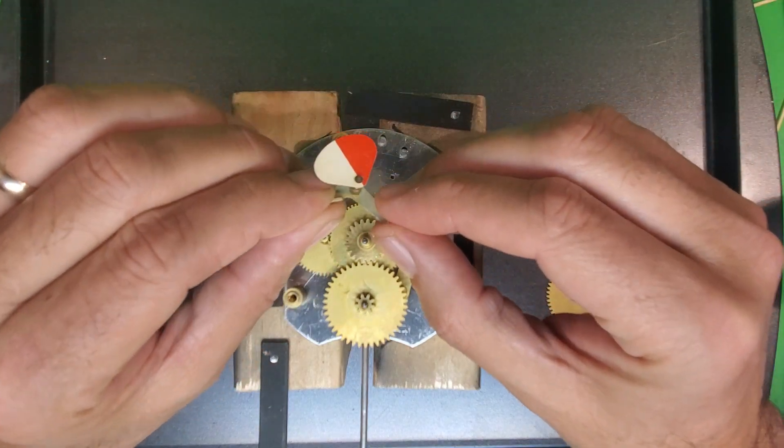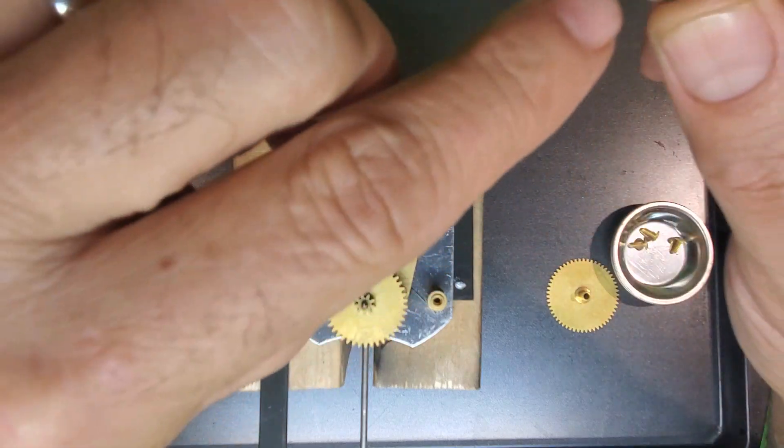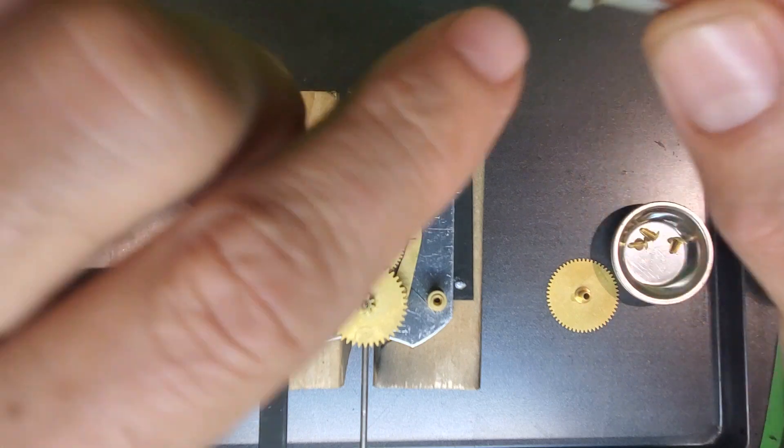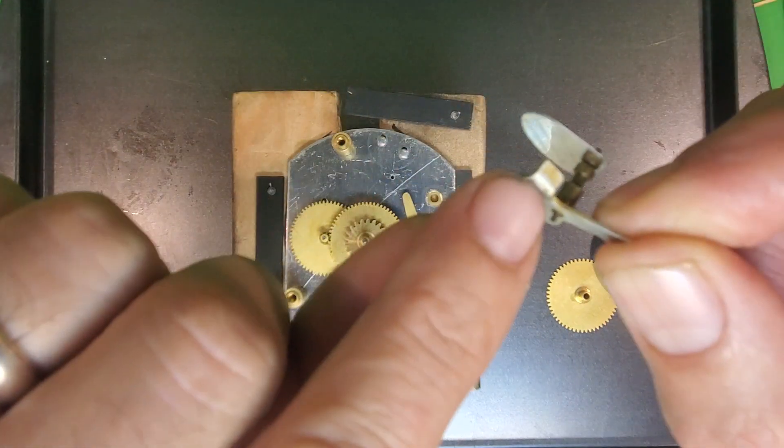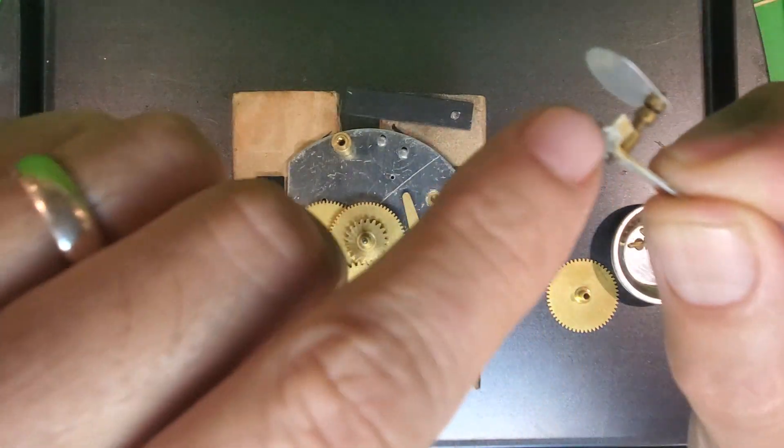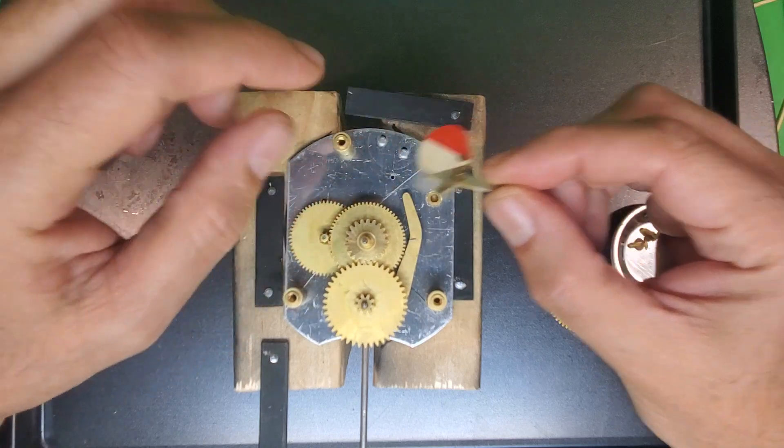So what we got to do is that little nub right there needs to go into that hole right there. And this flat area right here, there's the nub, right, that flat area has to contact the very end of that.